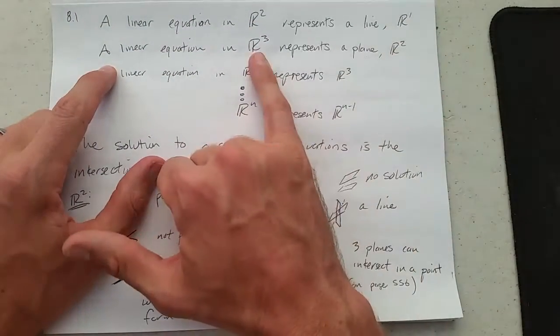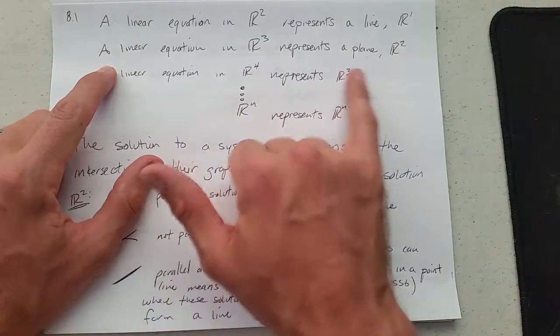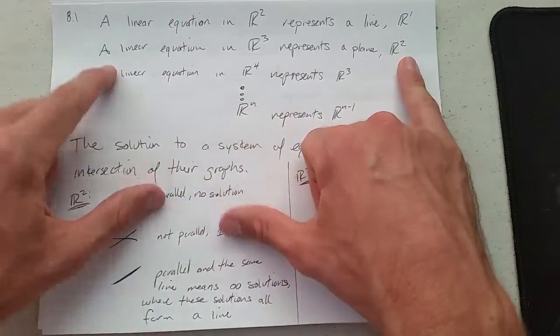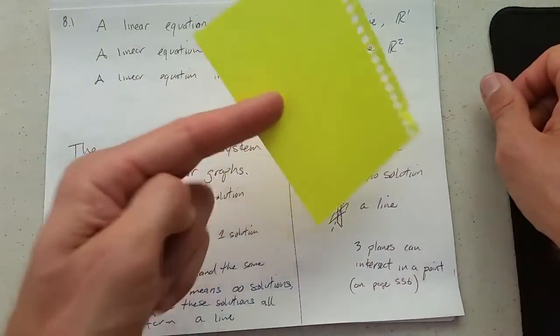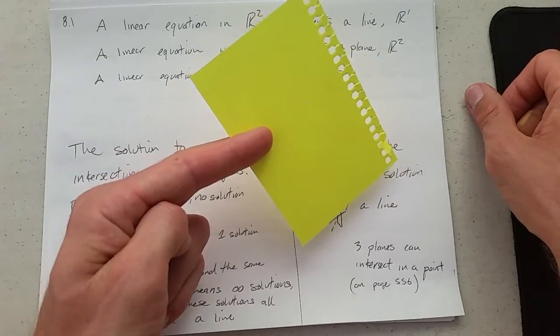A linear equation in three-dimensional space represents a plane. In three-dimensional space, a plane would be a two-dimensional object.